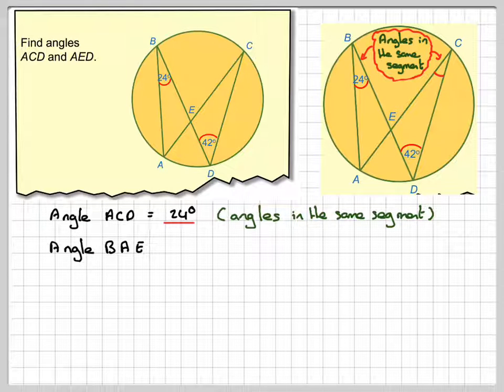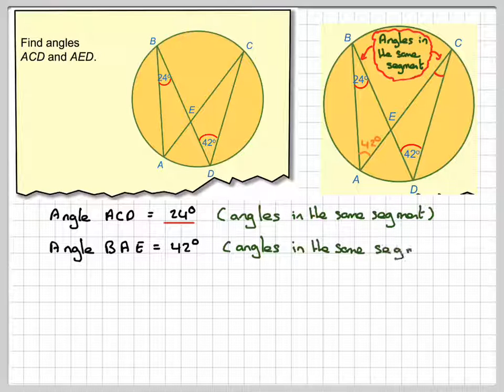Then it says find this angle here. But before we can do that, we need to find this one here. And if you turn this upside down, completely 180 degrees, you'll realize that this is 42 degrees for angles in the same segment.